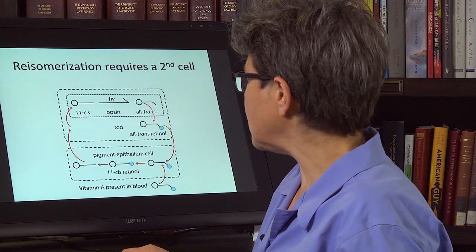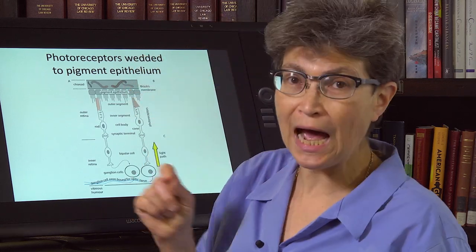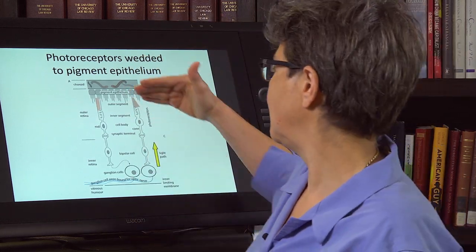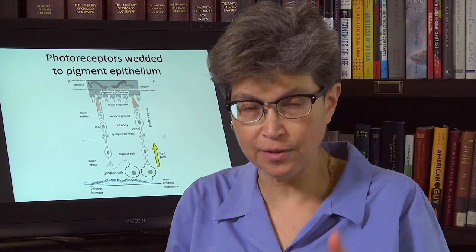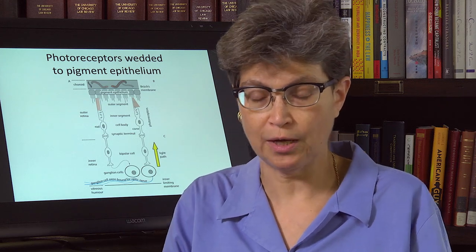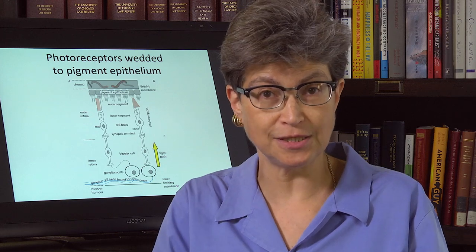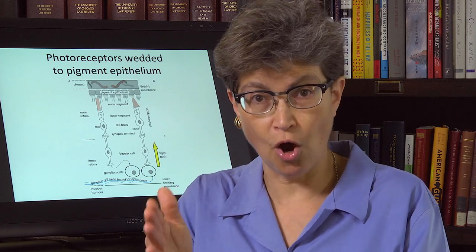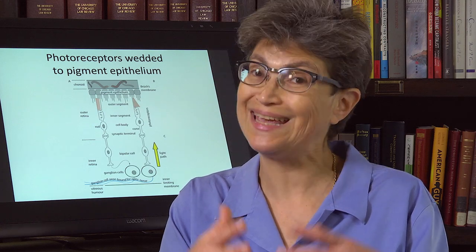So in other words, if you do not have the pigment epithelium, you will not have photoreceptor function. Without the pigment epithelium, the retina does not work. The photoreceptors do not work. And this is why retinal detachment is a complete disaster. You take the retina off of the pigment epithelium, and it's not going to work anymore. It cannot work.